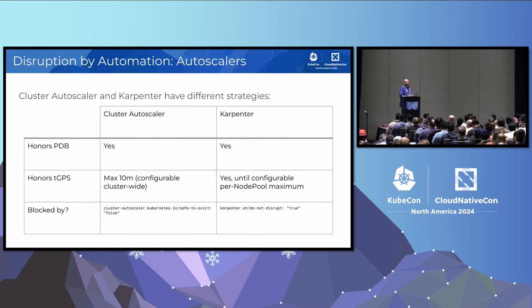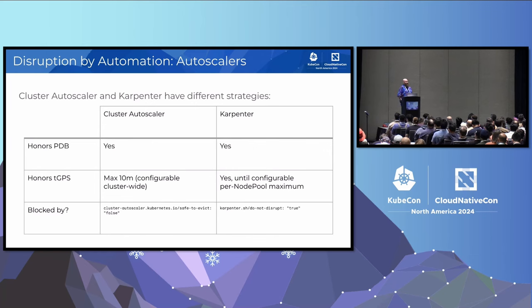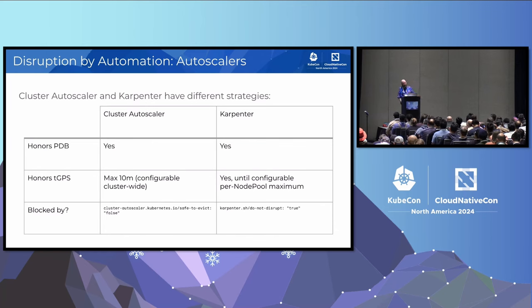The autoscalers also have a different set of choices. Cluster Autoscaler and Karpenter both honor the PDB and the termination grace period seconds — to a point. Many of you may not know that Cluster Autoscaler will actually just terminate your pod after 10 minutes by default. You get no warning, no status, no annotation on the pod — Cluster Autoscaler, if you don't change its defaults, will disrupt your pod regardless of what you set your termination grace period seconds to. Cluster Autoscaler and Karpenter both support a configurable per-node-pool maximum.